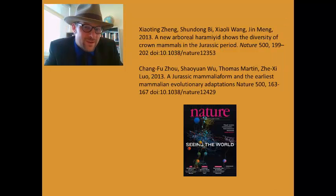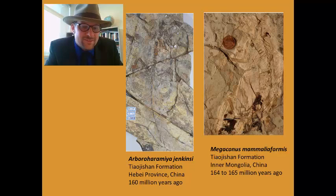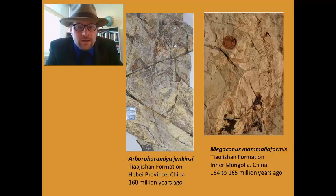In the latest issue of Nature, there are two competing articles describing two different skeletons belonging to the same group. Both of these skeletons are from the Tao Teixian Formation. This is Arboharamia and Megaconus.